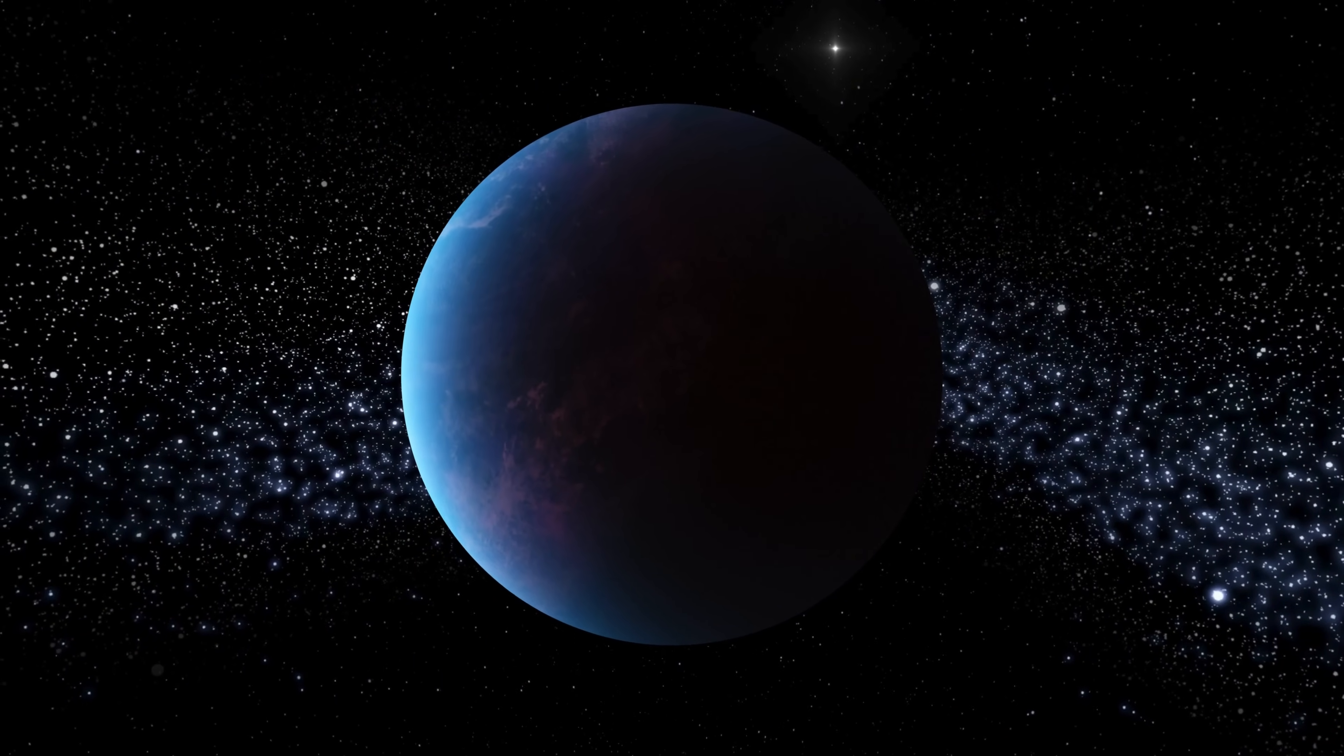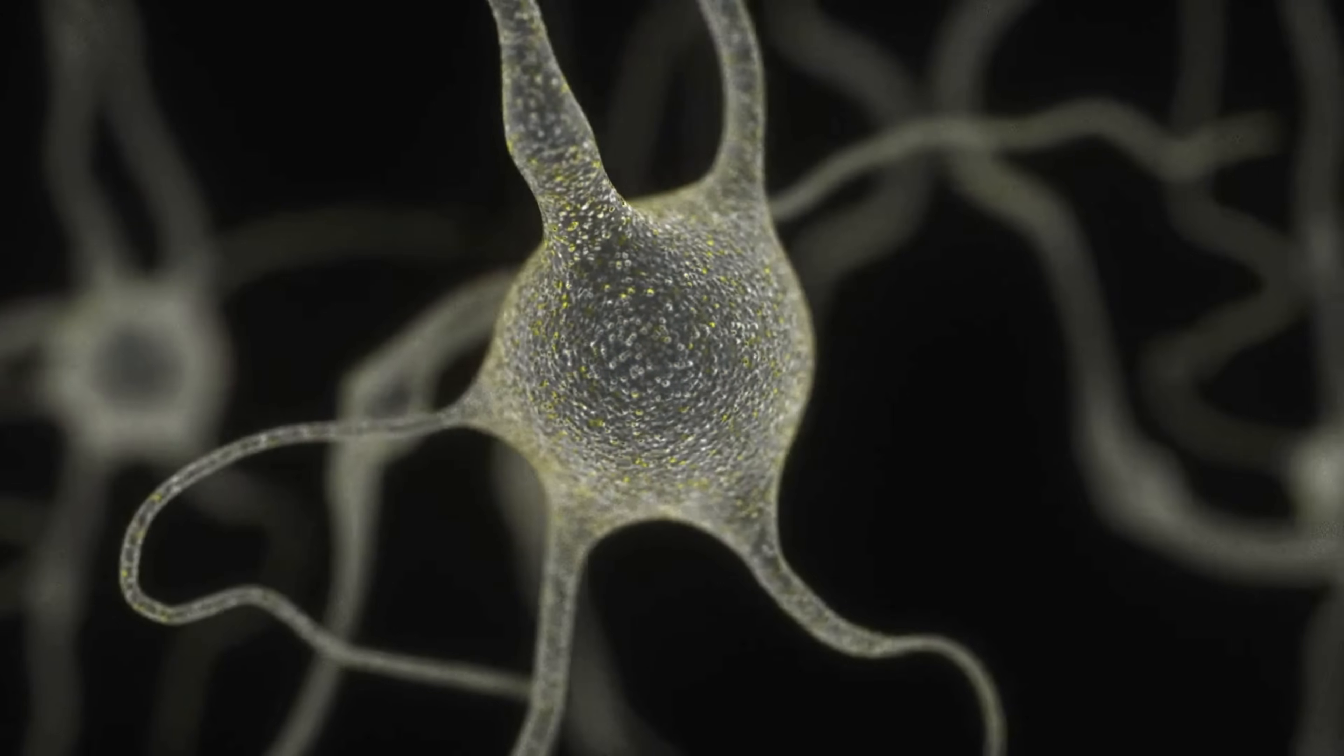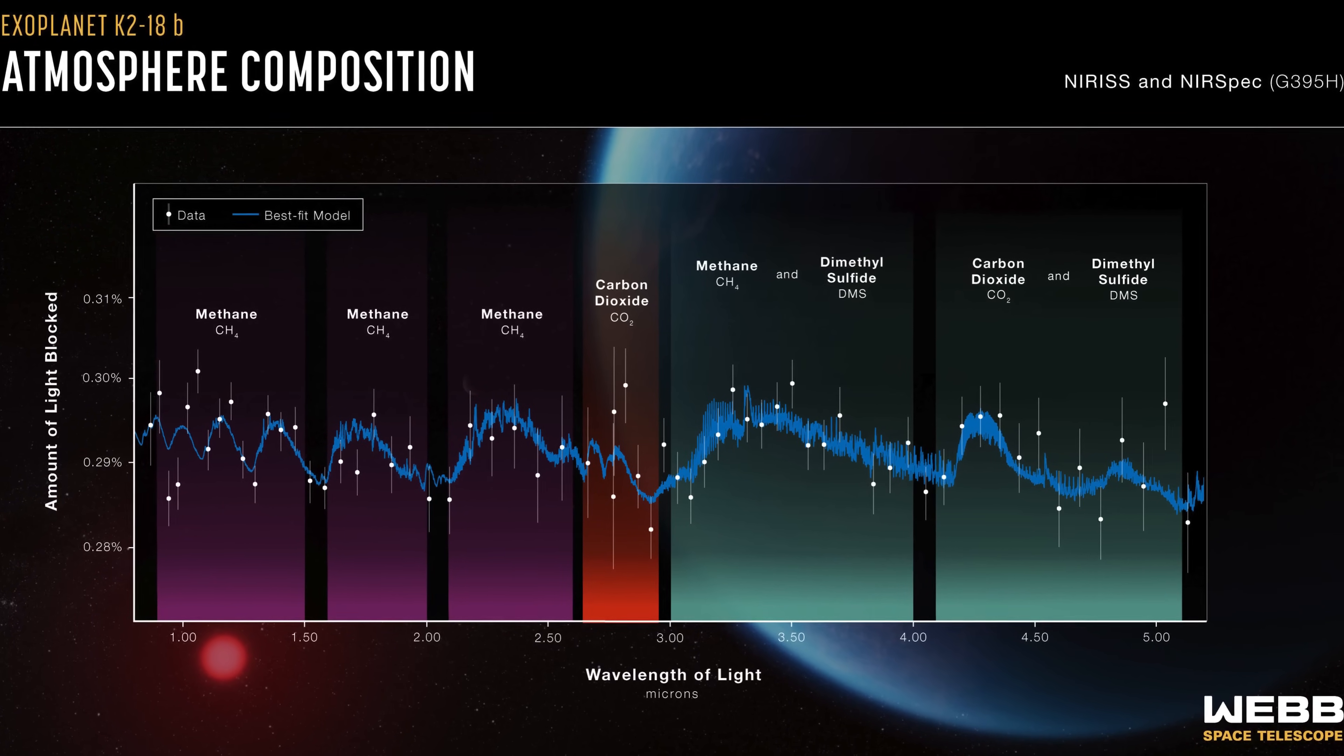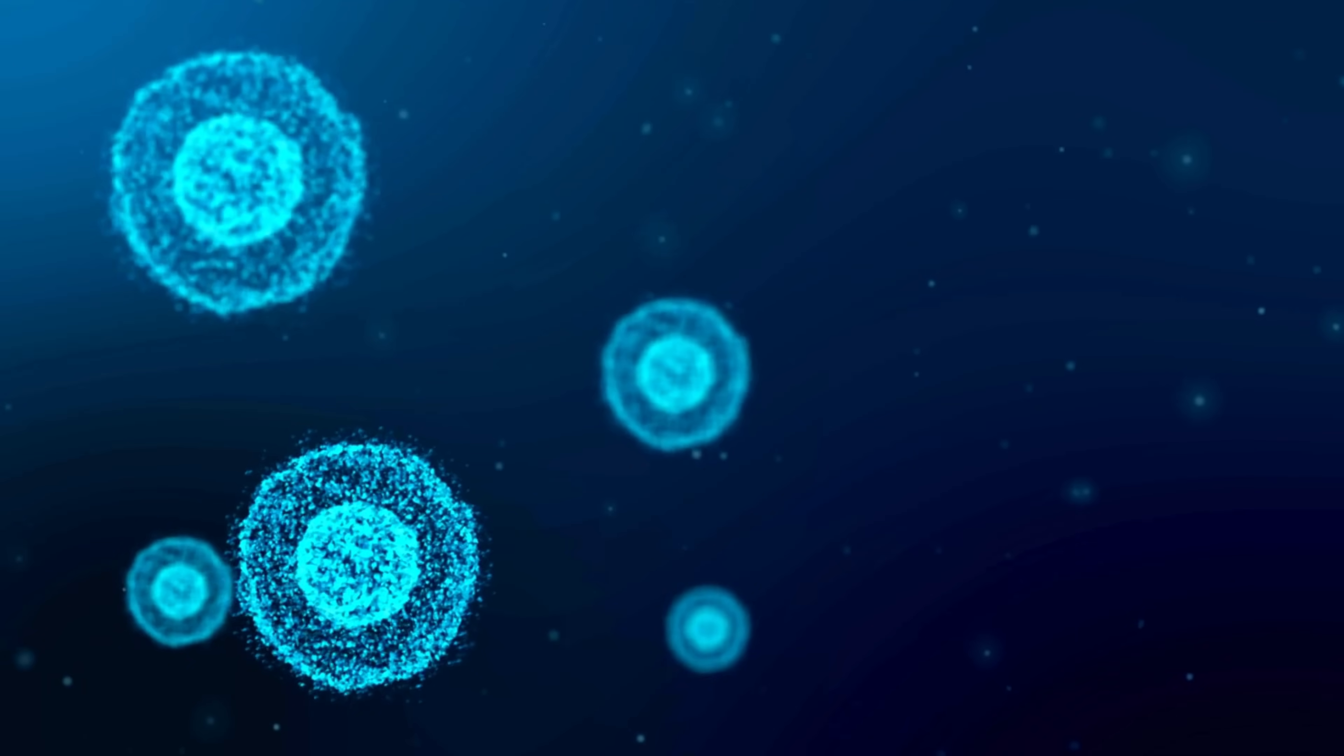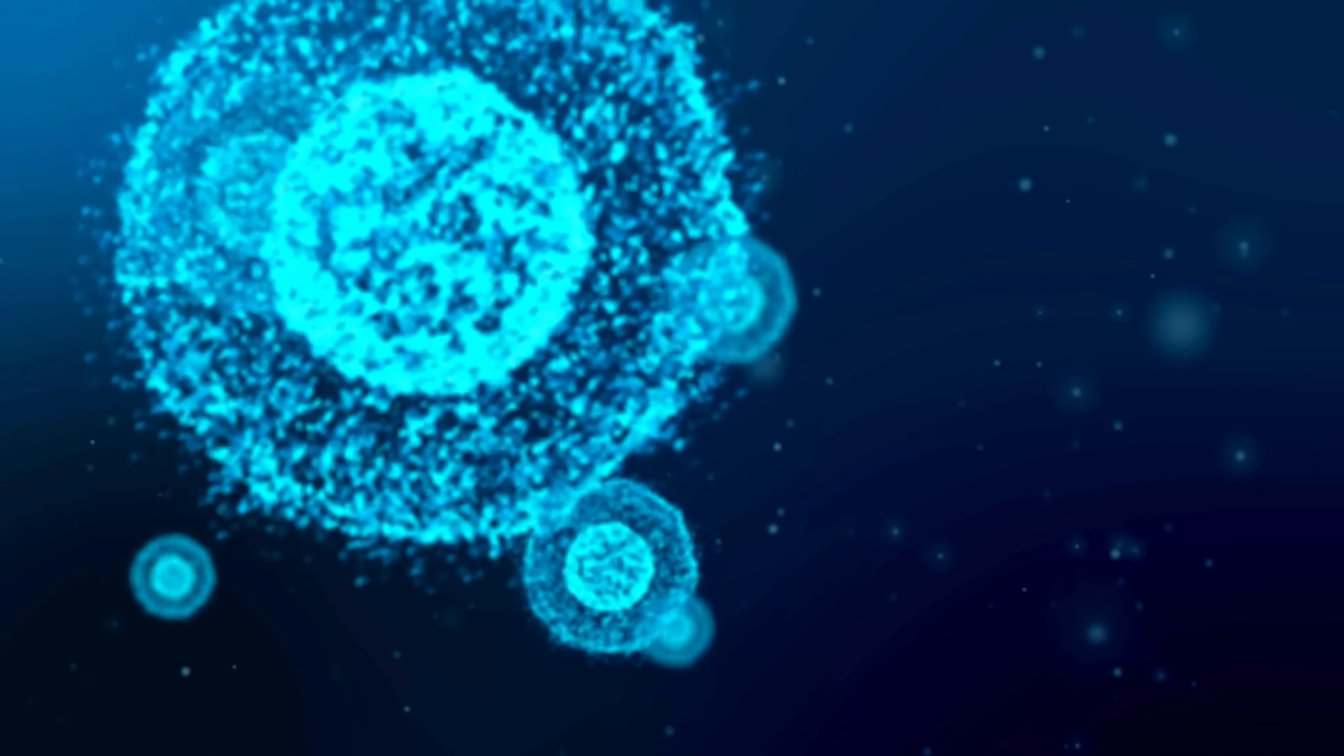This finding could change how we think about the universe and the possibility of life beyond Earth. Methane, carbon dioxide, and even signs of life-related chemicals have been found in the atmosphere of K-218b. These hints suggest that there might be some kind of biological activity on this distant exoplanet.